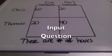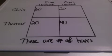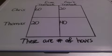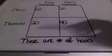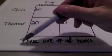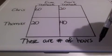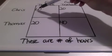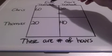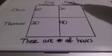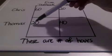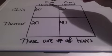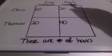This next example is going to be an input question. An input question shows the number of hours needed to produce a specific amount of output — the key word there is a specific amount of output. In this example, we have Chris and Thomas again. You will notice the numbers are the same — 60, 20, 20, and 40 — but it says these are number of hours. So it takes Chris 60 hours to produce one economics textbook and 20 hours to produce one government textbook. It takes Thomas 20 hours to produce one econ textbook and 40 hours to produce one government textbook.